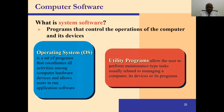There are two types of software: application software and system software. System software consists of programs that control the operation of the computer and devices. A typical example is the operating system, such as Windows or Linux. An operating system is a set of programs that coordinates all activities among computer hardware devices and allows users to run application software. Utility programs are also examples of system software.